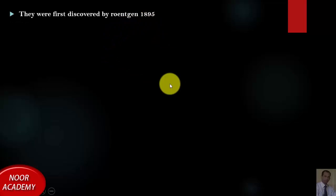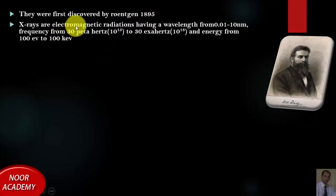Let's have a look at some of the facts about X-rays. They were first discovered by Röntgen in 1895. X-rays are electromagnetic radiations having a wavelength ranging from 0.01 to 10 nanometers, frequency from 30 petahertz (10^15) to 30 exahertz, and energy from 100 electron volts to 100 kiloelectron volts.